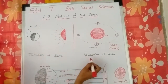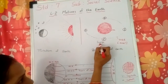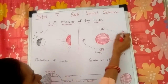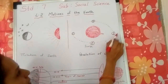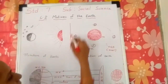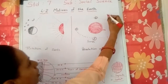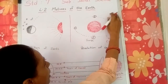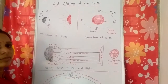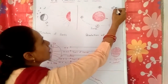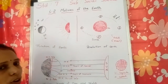Now, revolution. When the earth moves around the sun, it is called revolution. The earth takes 365 days to complete one revolution.